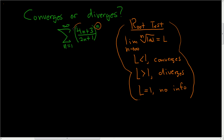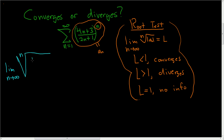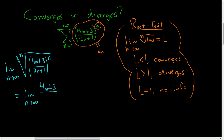So in this problem, our a sub n is this right here. It's already positive, so we don't have to worry about the absolute value. We'll take the limit as n approaches infinity of the nth root — giant root here — of (4n+3) divided by (2n+1). Taking the nth root of something raised to the nth power, it goes away. So you just get the limit as n approaches infinity of (4n+3) divided by (2n+1).